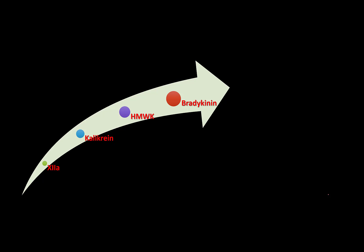The high molecular weight kininogen again has its effect on Factor 12, and kallikrein again has its action on Factor 12, activating it. So there are multiple positive feedback loops operating here.